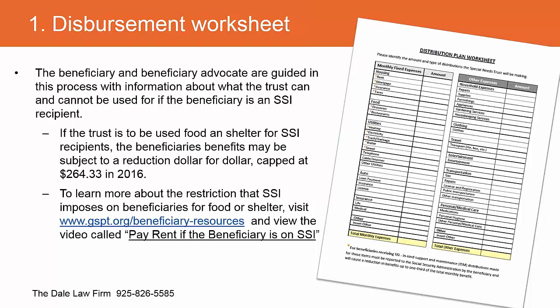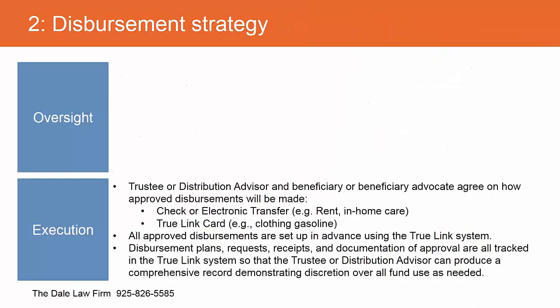To learn more about these restrictions, go to the Golden State Pool Trust website at gspt.org/beneficiary-resources. There's a video called 'Paying Rent if the Beneficiary is on SSI.' Even if you're not a GSPT beneficiary, the concept is exactly the same whether you are a beneficiary of a non-pool trust or a pool trust.